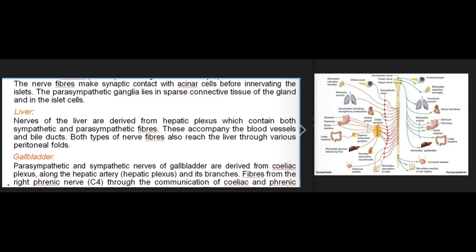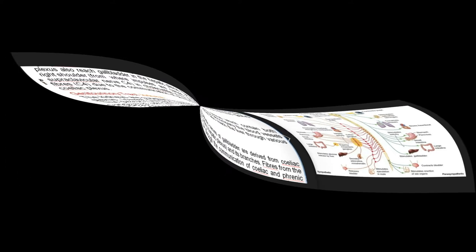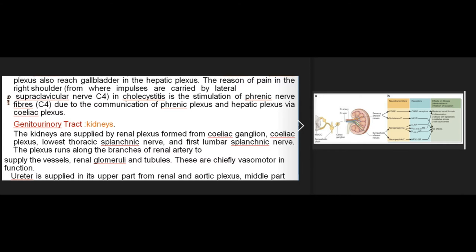Liver: nerves are derived from the hepatic plexus, which contains both sympathetic and parasympathetic fibers; these accompany the blood vessels and bile ducts. Both types also reach the liver through various peritoneal folds. Gallbladder: parasympathetic and sympathetic nerves are derived from the coeliac plexus along the hepatic artery, hepatic plexus, and its branches. Fibers from the right phrenic nerve through the communication of the coeliac and phrenic plexuses also reach the gallbladder in the hepatic plexus — this explains referred pain in the right shoulder in cholecystitis, as impulses are carried by the lateral supraclavicular nerve (C4) due to the communication of the phrenic plexus and hepatic plexus via the coeliac plexus.